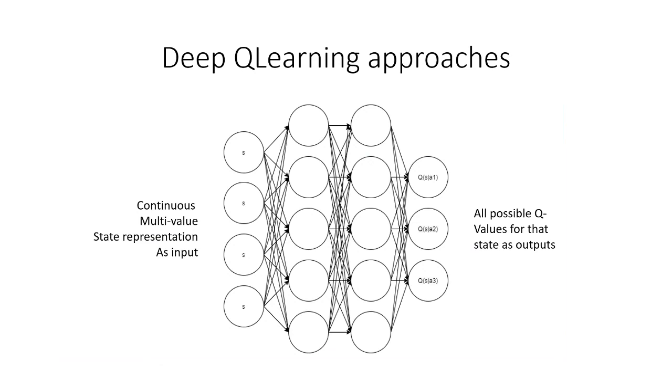To get rid of that problem, we can use deep Q learning approaches. In deep Q learning approaches, we're using neural networks as function approximators for these Q values. So instead of a table, we now have state inputs here. These can be continuous, and these can be multi-values. We can have multiple values as a singular state. It could be roll, pitch, yaw, and speed, which then all together represents the state as opposed to just having a singular value. The hidden layers are up to the designer. We can have them however we want.